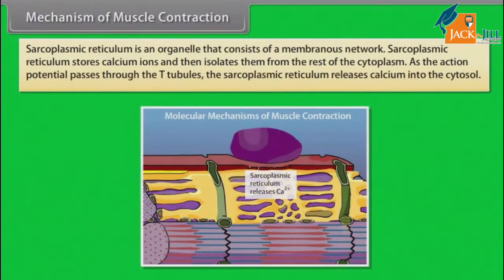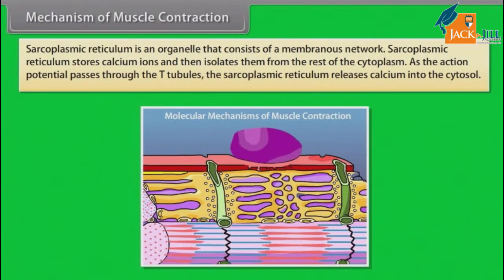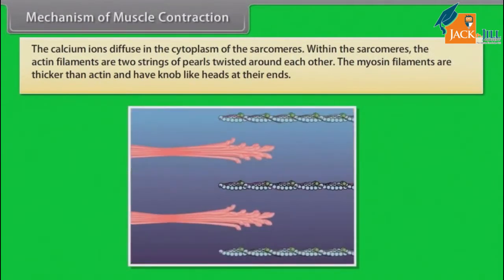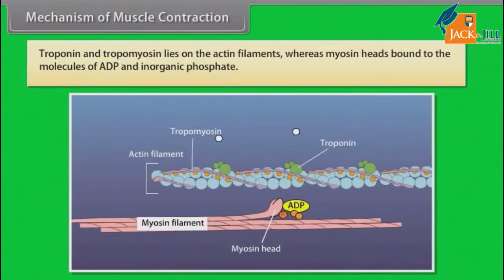The sarcoplasmic reticulum is an organelle consisting of a membranous network that stores calcium ions and isolates them from the rest of the cytoplasm. As the action potential passes through the T-tubules, the sarcoplasmic reticulum releases calcium into the cytosol. The calcium ions diffuse into the cytoplasm of the sarcomeres. Within the sarcomeres, the actin filaments are two strings of pearls twisted around each other. The myosin filaments are thicker than actin and have knob-like heads at their ends. Troponin and tropomyosin lie on the actin filaments, while myosin heads are bound to ADP and inorganic phosphate.